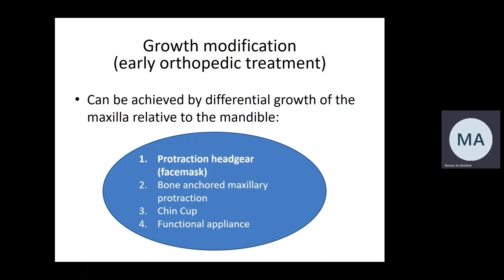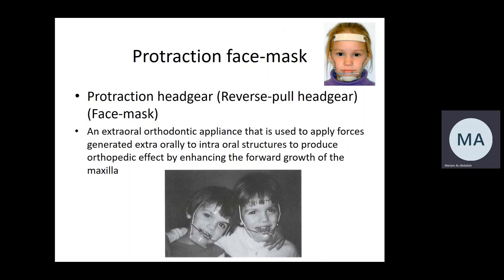The protraction face mask is also called protraction headgear, reverse pull headgear, or face mask — all refer to the same appliance, which is different from conventional headgear. It is an extraoral orthodontic appliance that applies forces generated from extraoral sources, transferred intraorally to enhance forward growth of the maxilla. The basic components are a forehead piece, a chin piece, and a metal framework. The framework can go around the lateral border of the face — the Delaire-type face mask — or as a single rod in front of the face, called a rail-style face mask.